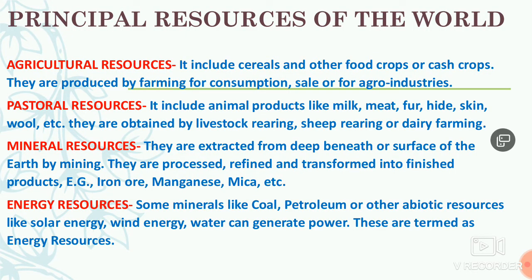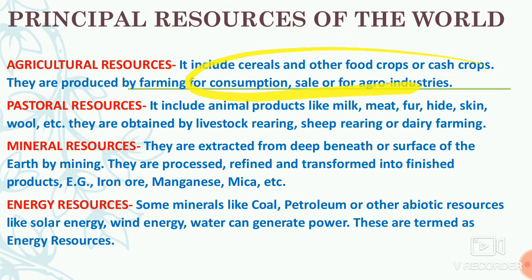There are four principal resources of the world. First, agricultural resources — those we obtain from agriculture. It includes cereals and other food crops or cash crops. Cash crops means a single crop is grown. They are produced by farming methods for consumption, for sale in the market, or for agro-industries — that is, agricultural industries.